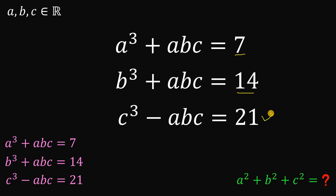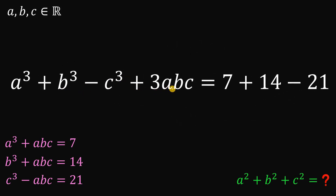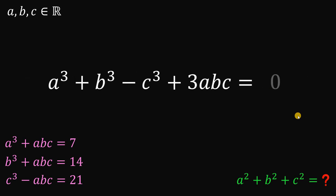And it works out when our equation is equal to 0. So what we're going to do is subtract the third equation from the sum of the first and the second. If we do that, we get a cubed plus b cubed minus c cubed plus 3abc equals 7 plus 14 minus 21, which is simply equal to 0.